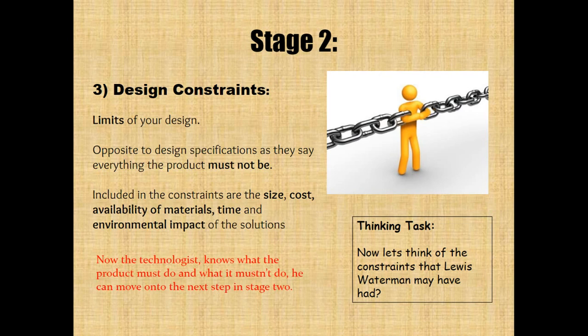Now the technologist knows what the product must do and what it mustn't do, and can move on to the next steps in stage two. Thinking task: think of the constraints that Lewis Waterman may have had. Some constraints were cost, materials, and time.